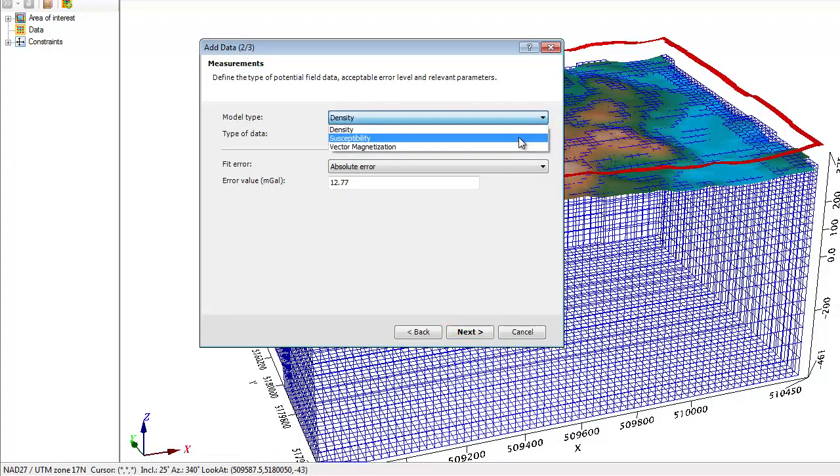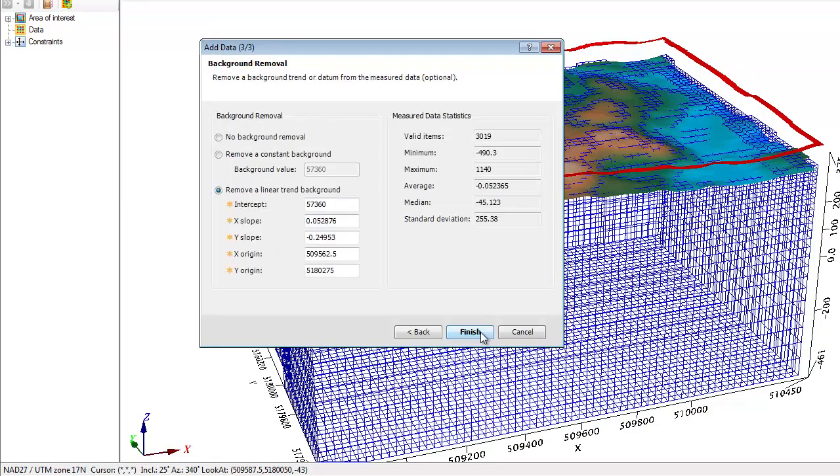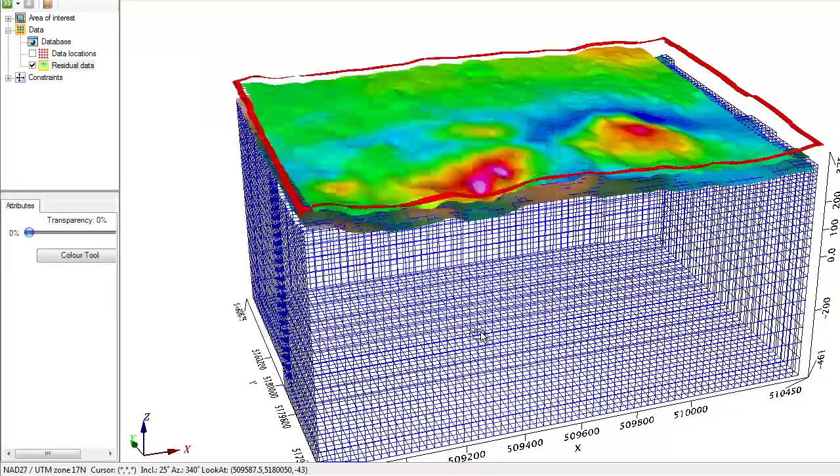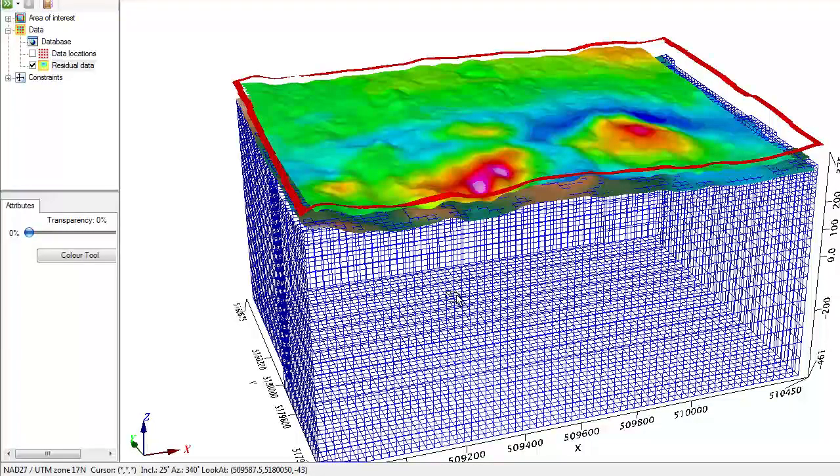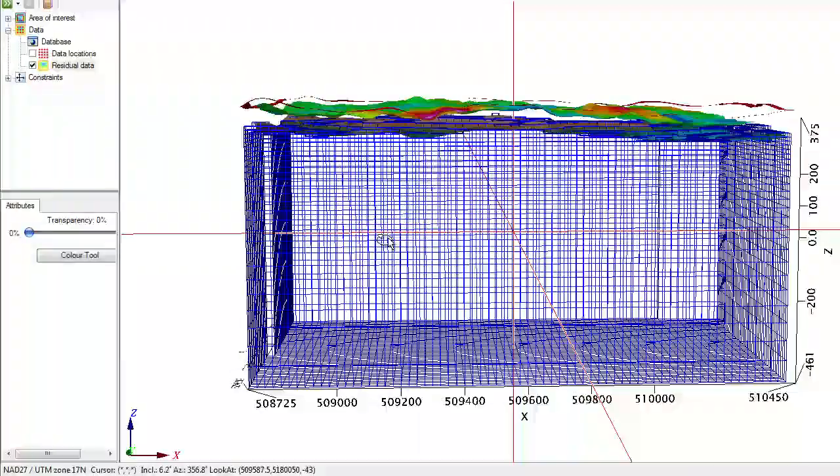Since it's magnetic data, we will be modeling susceptibility. Also note how, again, Voxi filled in details for me. All surveys have inherently an associated noise level. Also, we need to know the geomagnetic field at the time of the survey in order to properly calculate the susceptibility model. And lastly, it is not really absolute values of susceptibility that we will be calculating, but rather the variation. So it is prudent to remove the background in order to better resolve the variation in the susceptibility. I now see the magnetic data draped on the elevation at which it was surveyed. I am ready to go.